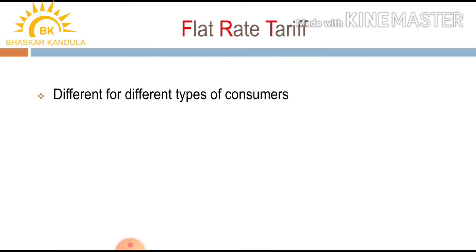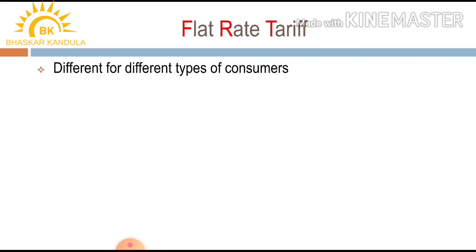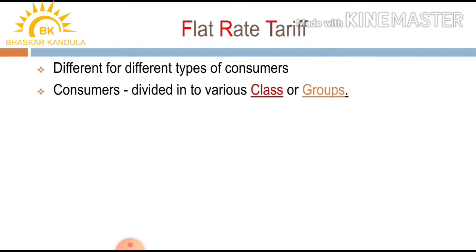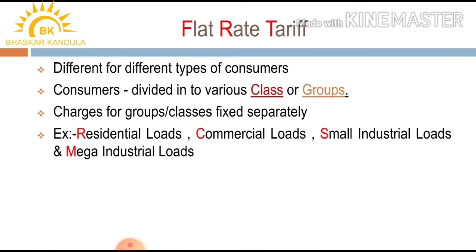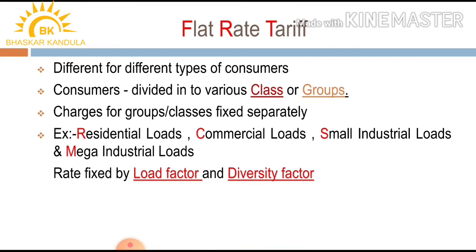In flat rate tariff, the tariff is different for different types of consumers. The consumers are divided into various classes or groups, and the tariff for each group or class is fixed separately. Examples of these classes or groups are residential loads, commercial loads, small industrial loads, and mega industrial loads. The rate for each group is fixed by consideration of load factor and diversity factor.